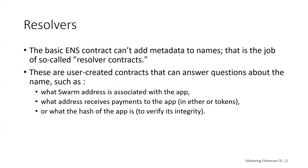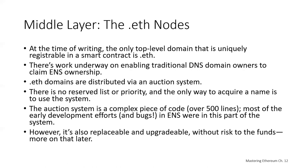The basic Ethereum Naming System contract can't add metadata to names — that's the job of resolver contracts. These are user-created contracts that can answer questions about the name, such as which swarm address is associated with a decentralized app, what address receives payments in Ether or tokens, or what the hash of the app is to verify its integrity. The first top-level domain created was .eth, though work is ongoing to enable additional domains.